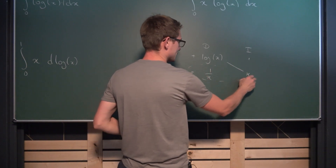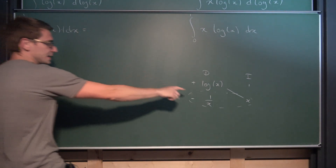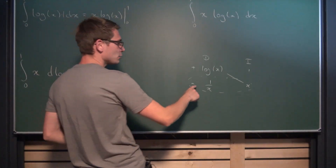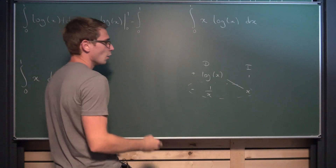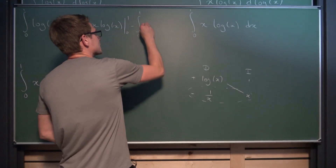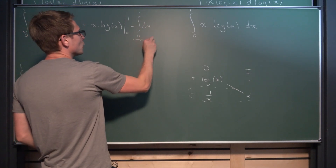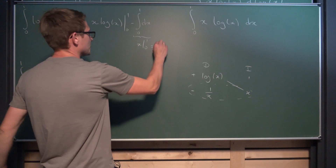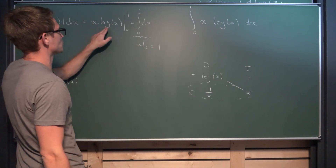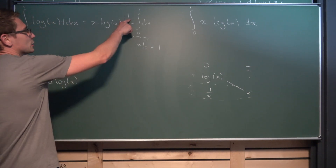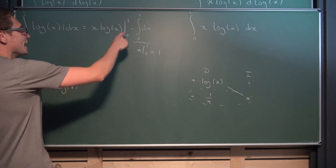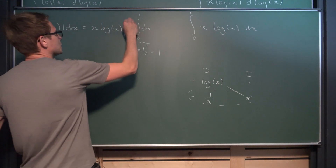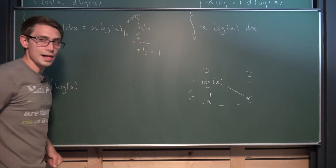Now we multiply those together and take the integral of the remaining part, yielding x·ln(x) evaluated from 0 to 1, minus the integral from 0 to 1 of x times 1/x — which is just 1 — dx. That last integral gives x evaluated from 0 to 1: at 0 it vanishes, at 1 it's 1. So overall we have x·ln(x) from 0 to 1, minus 1.